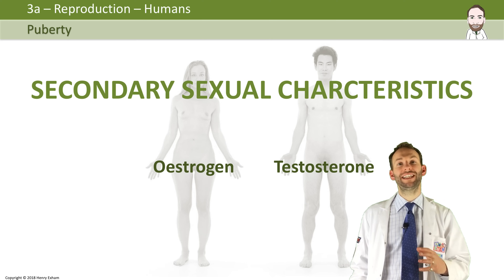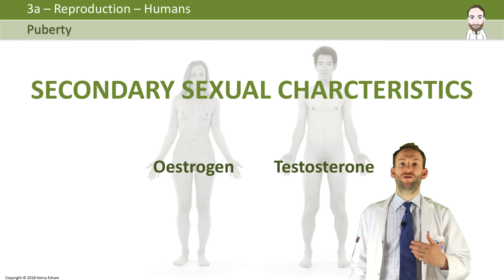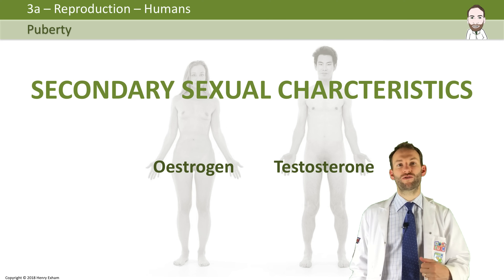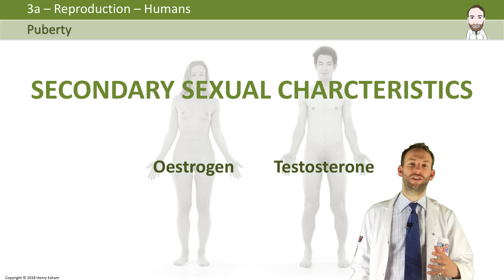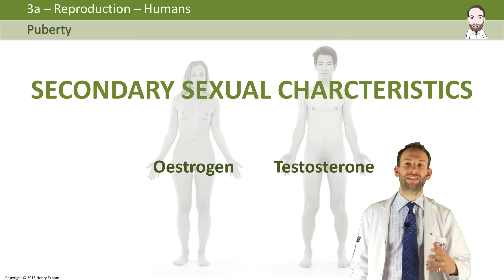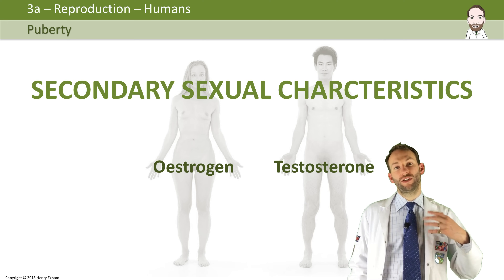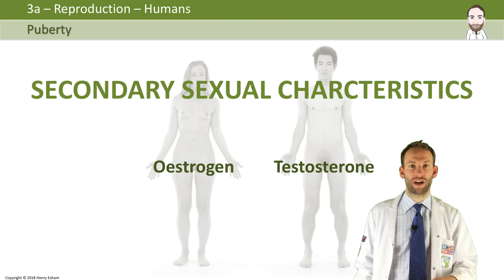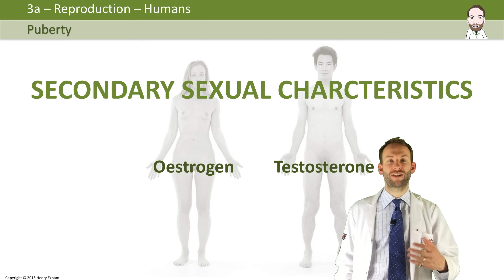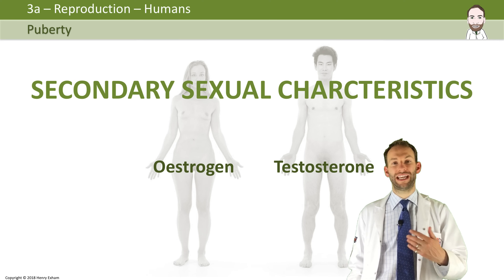During teenage years, boys and girls become sexually mature. This is controlled by the sex hormones — testosterone in males and estrogen in females. The sex cells start being produced, or released in girls, at that age once secondary sexual characteristics develop. You're born with your primary sexual characteristics — either you're a boy or a girl — and you have those basic sexual organs, but they're not activated or really working until you hit puberty.